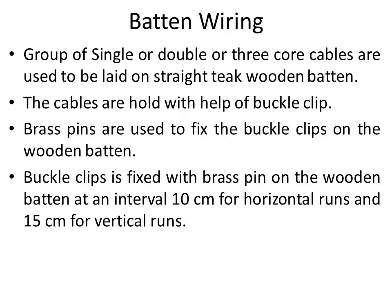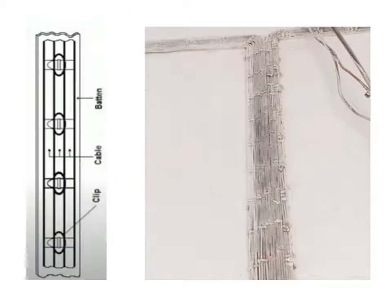Buckle clips are fixed with brass pins on the wooden batten at intervals of 10 cm for horizontal runs and 15 cm for vertical runs. In the diagram, the batten is fixed on the wall, cables are laid on the batten, and the cables are fixed with a clip that is secured with brass pins.